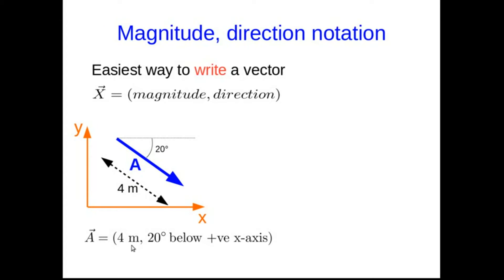Then we could write it as 4 meters, 20 degrees below the positive x-axis. Now that might be confusing you. You might be saying, but it's above the x-axis. What do you mean 20 degrees below the positive x-axis?